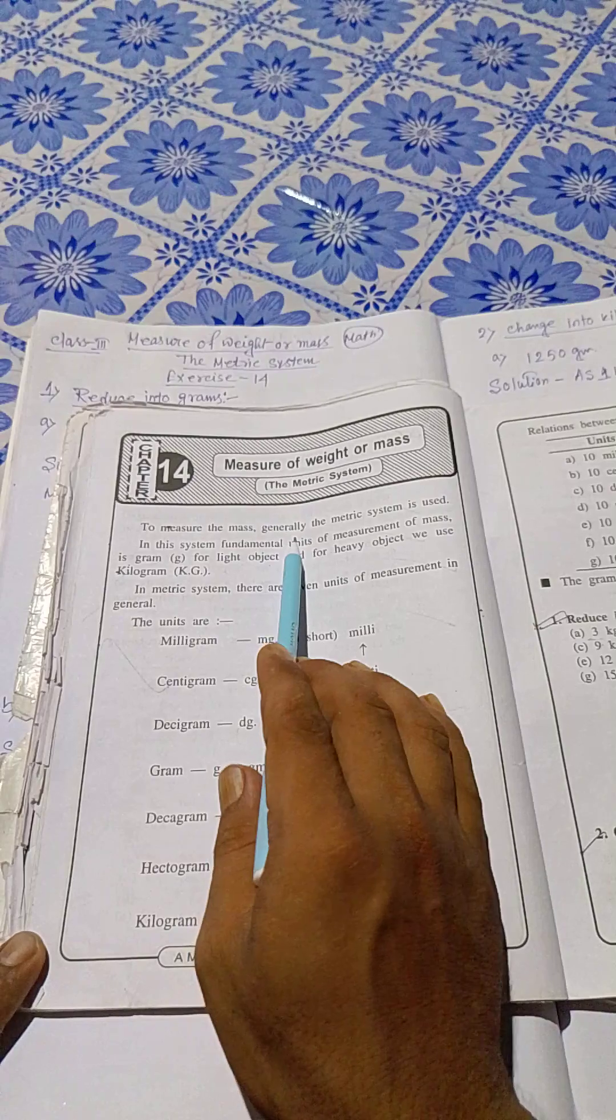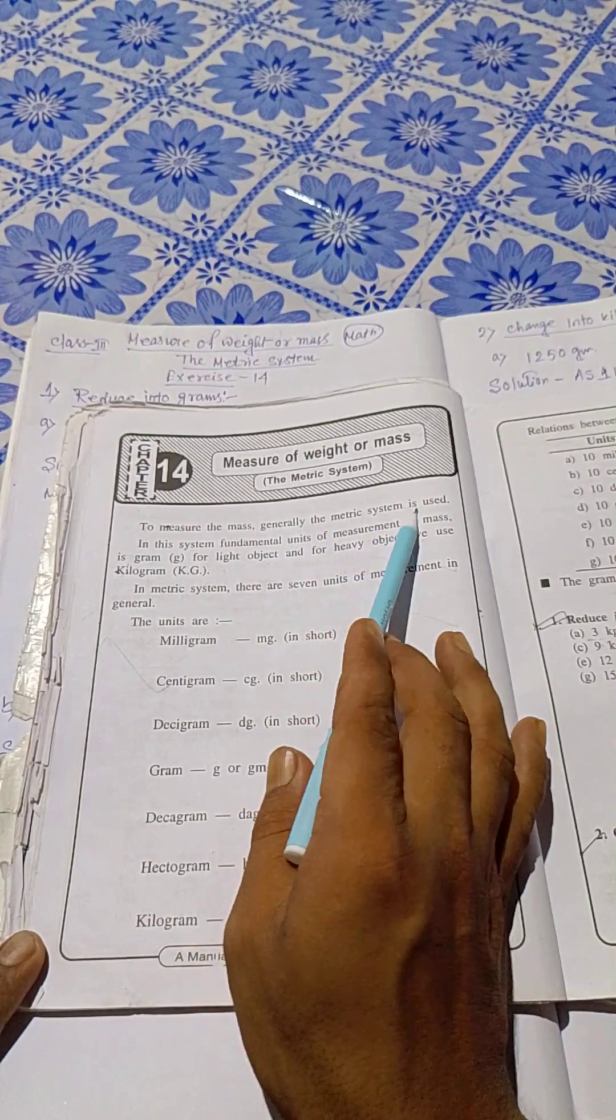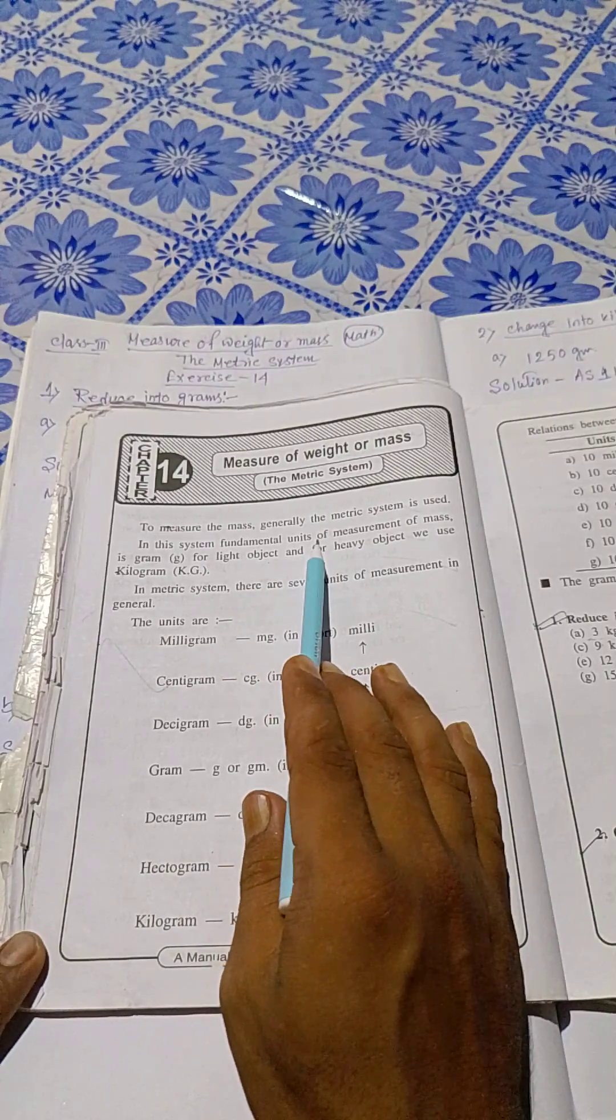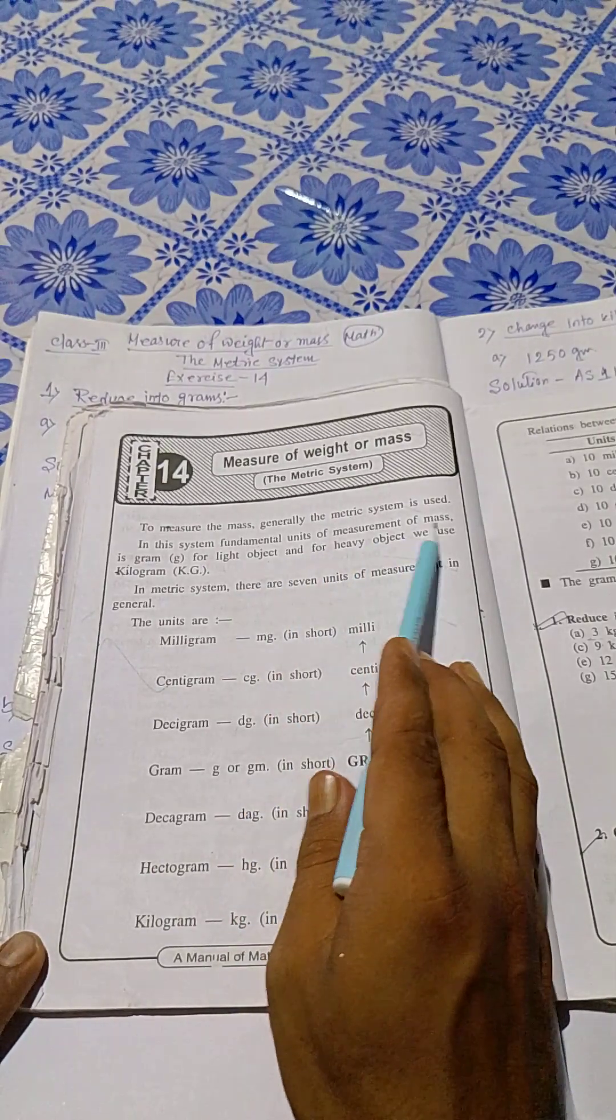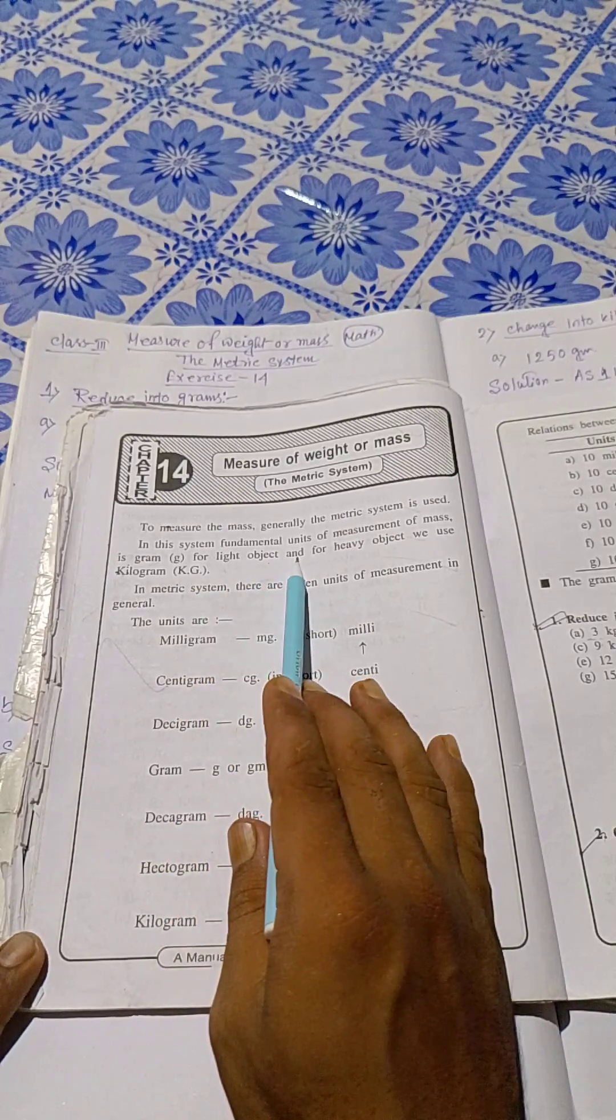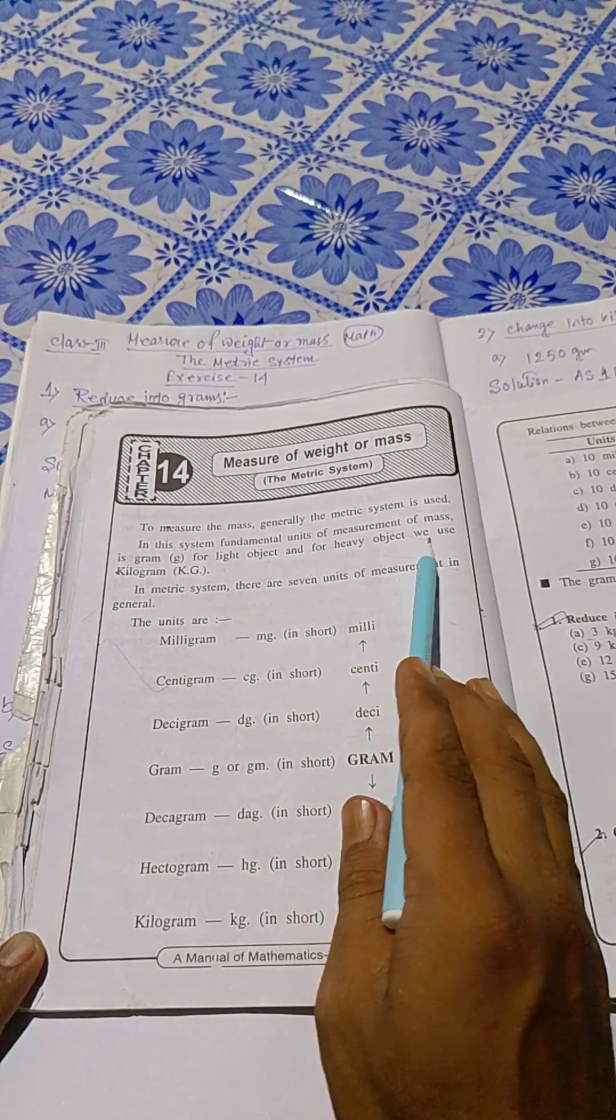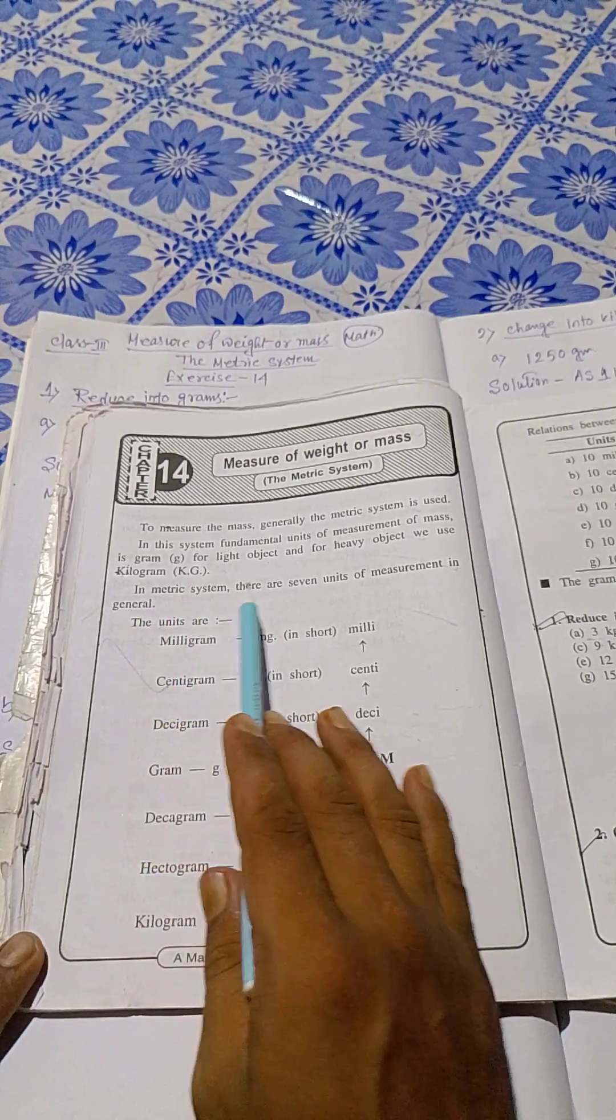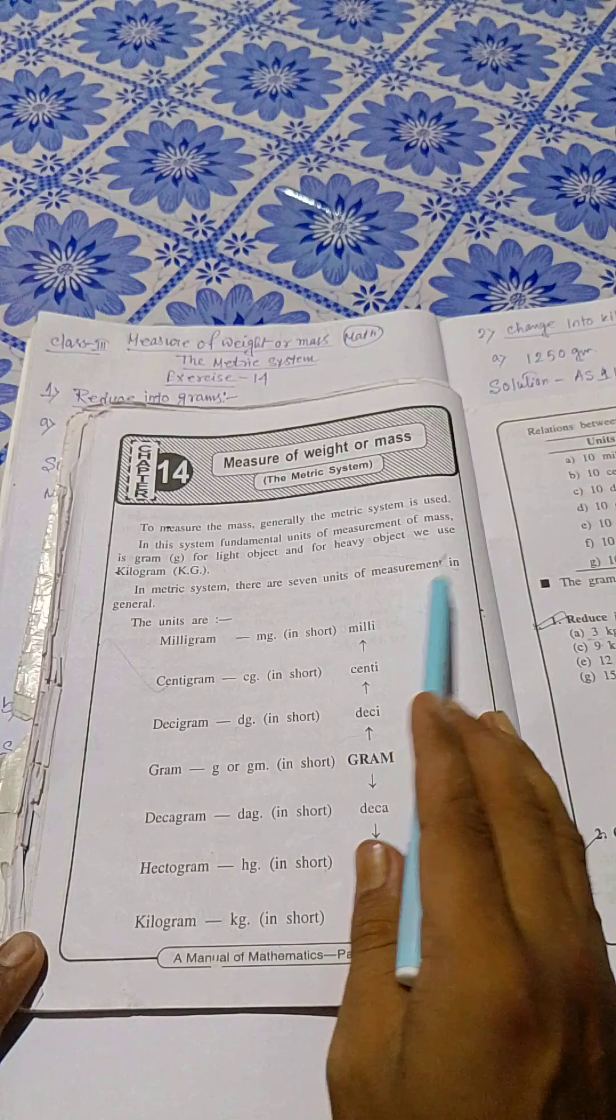Generally the metric system is used. In this system, the fundamental unit of measurement of mass is gram for light objects, and for heavy objects we use kilogram (kg). In metric systems there are seven units of measurement.